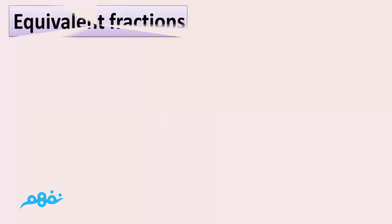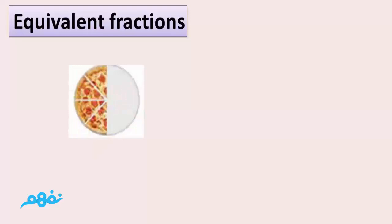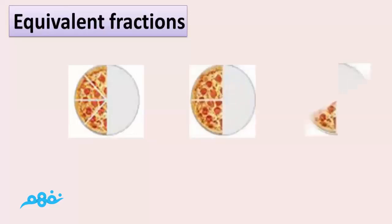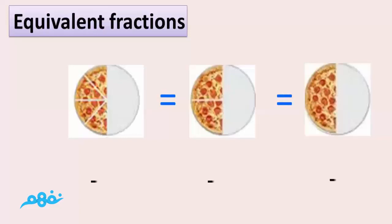Equivalent fractions. Some fractions may look different but are really the same. To find equivalent fractions, multiply or divide both the numerator and the denominator by the same number other than 0.